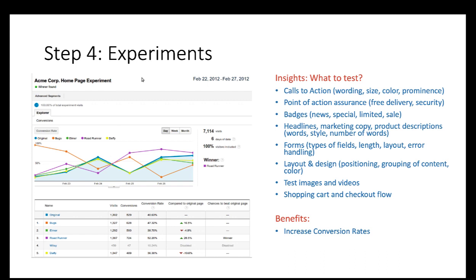Step four is experiments. There are many design elements we can test — call-to-actions including wording, font size, and button color; point-of-action assurances such as free delivery or security badges; urgency cues like special limited deals or sales; headlines, marketing copy, or product descriptions. For web forms, you can try different field types — drop-down lists versus radio buttons — and vary the length, layout, and error handling. For layout and design, you can try different content positions, color schemes, and images or videos.